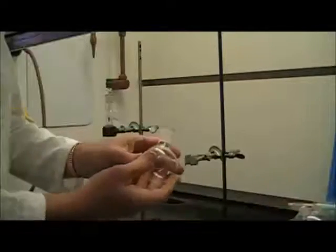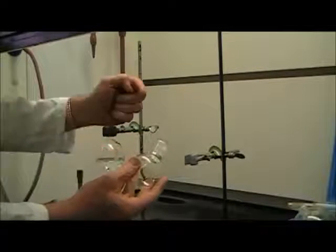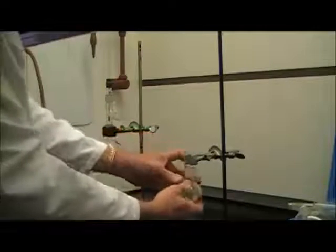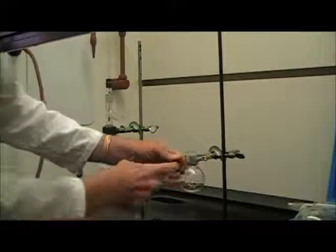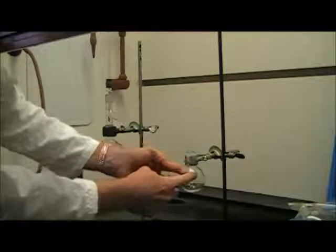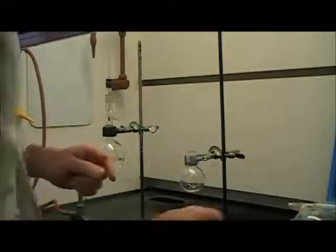So instead, let's go ahead and attach the smaller round-bottom flask. This is what we're going to be collecting into. I'm going to attach it to the second ring stand, and notice that again, clamping it at the neck of the round-bottom flask, just as I did on this round-bottom flask.